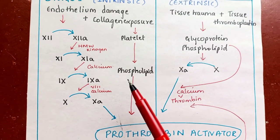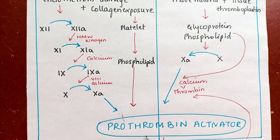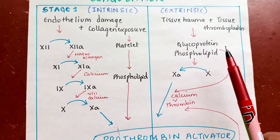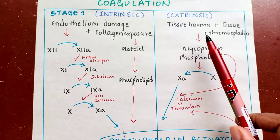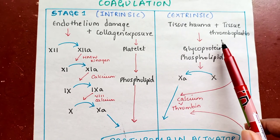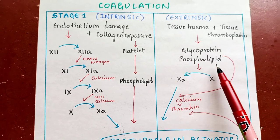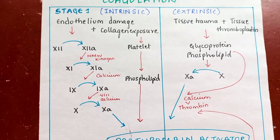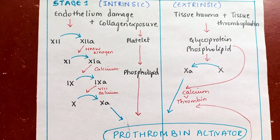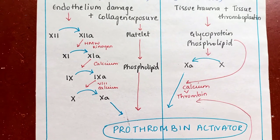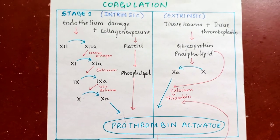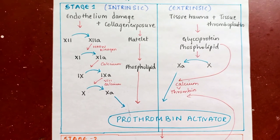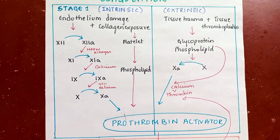When platelets come in contact with collagen, they release phospholipids which later activate the prothrombin. In the extrinsic pathway, whenever there is tissue damage, tissue thromboplastin is released, which contains glycoproteins and phospholipids. This activates Factor 10 in the presence of calcium ions, Factor 5, and thrombin. So basically, Stage 1 results in the formation of prothrombin activator.